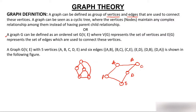A graph G can be formally defined as an ordered set G(V, E), where V(G) represents the set of vertices — also called nodes — and E(G) represents the set of edges, which are used to connect these vertices.